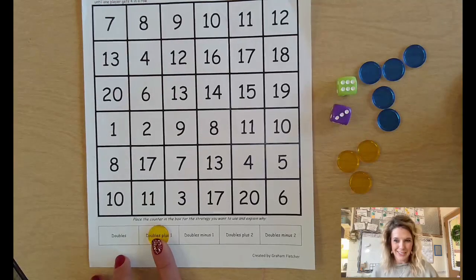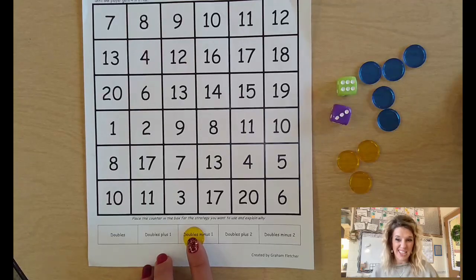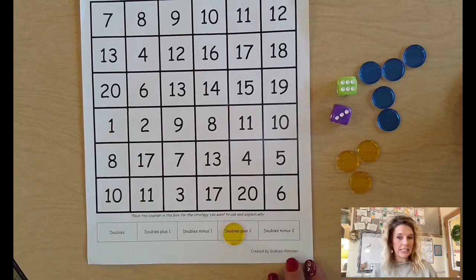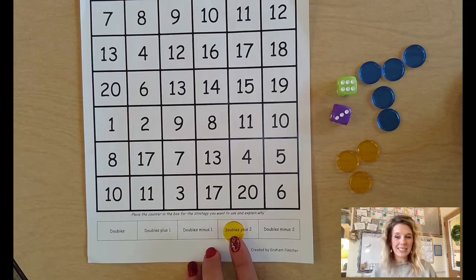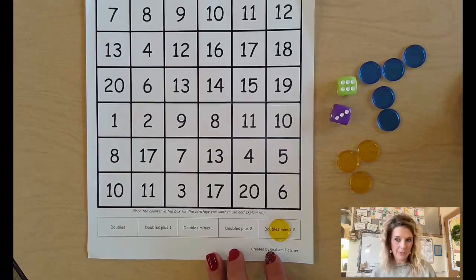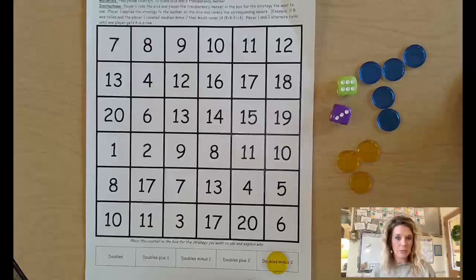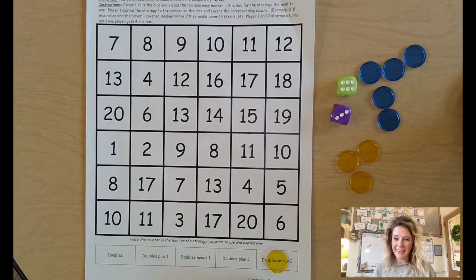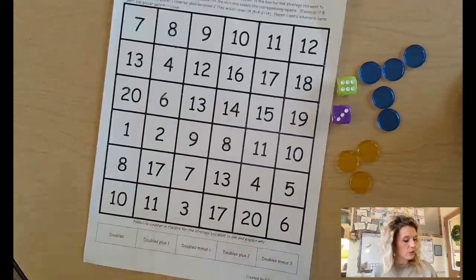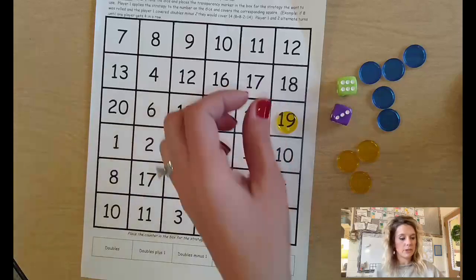If I double minus one, I'd have 17. If I double plus two - remember I'm thinking about 18 - so I'd have 20. If I had doubles minus two, I would have 16. So right now there's nothing on the board, so I could choose any spot. But when it comes to my turn next, I'm really going to want to know those things. So I think I'll choose 19 for my first turn.